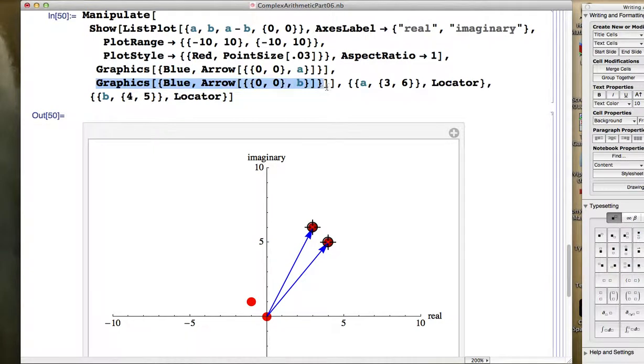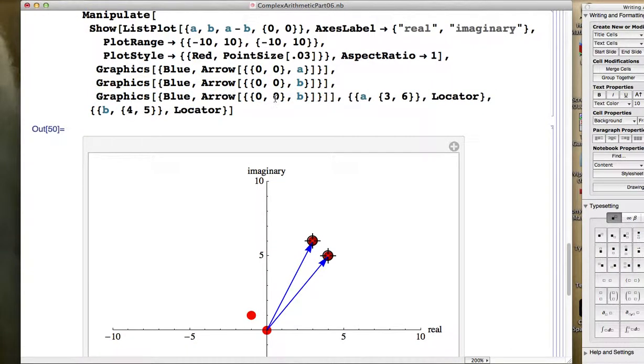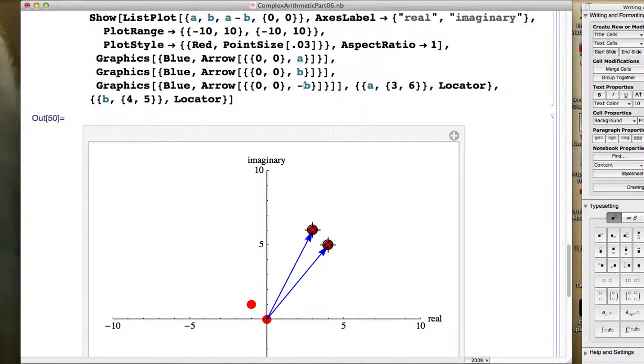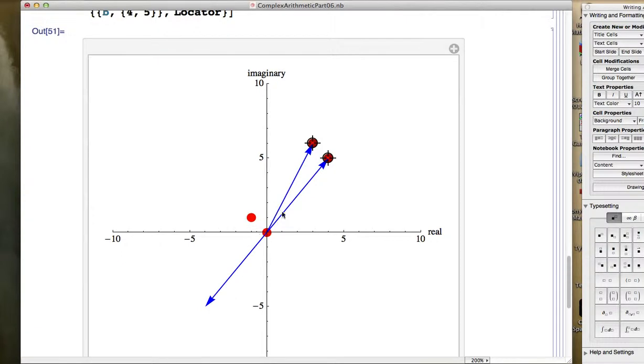Let's add some arrows in here to illustrate how a minus b can be thought of as a plus negative b. I'm going to draw an arrow at negative b from the origin to negative b. Notice that points in the opposite direction as b does and is the same length.